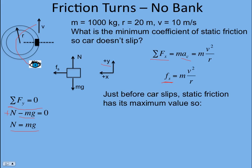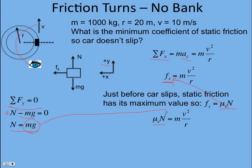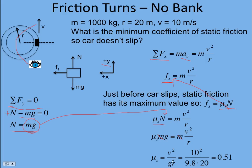Static friction is only as big as it needs to be, but here we're solving for just before the car slips, so static friction has its maximum value: force of static friction equals μ times the normal force. Substituting that in, we get μ times the normal force equals mv² over r. Substituting the normal force as mg, we get μmg equals mv² over r. The m's cancel, so any car with similar tires could make this turn. Solving for μ gives v² over gr, which comes out to 0.51.